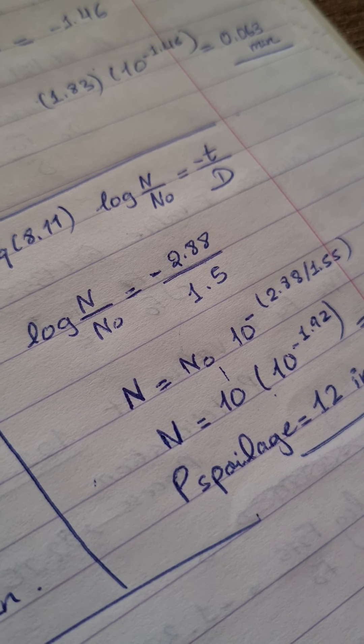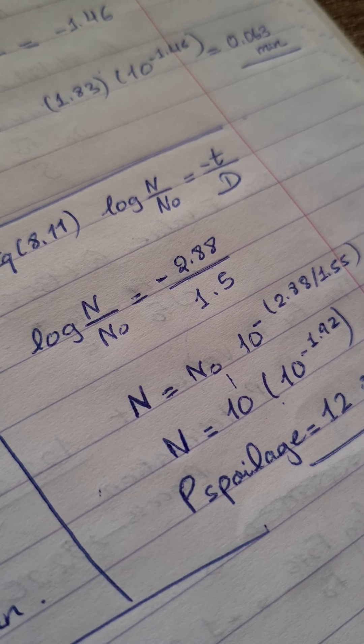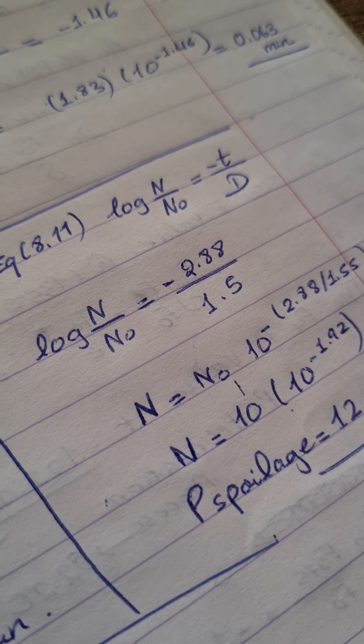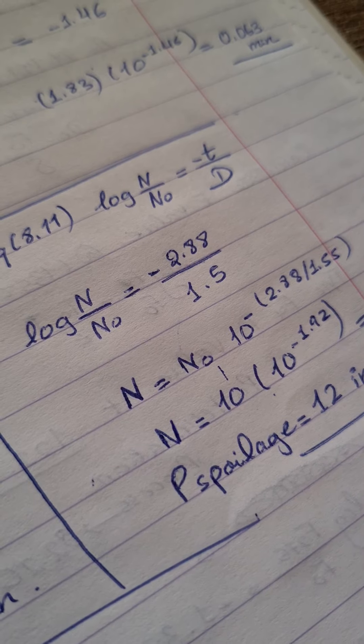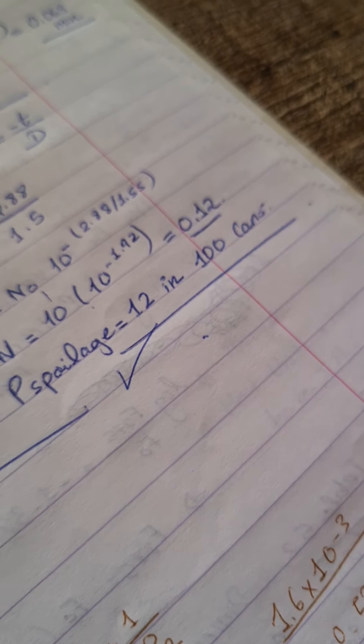So N would be equal to 0.12. So what is the probability that we can get out of this? It would be 12 spores in each hundred cans. So this is the final answer. Here we go.